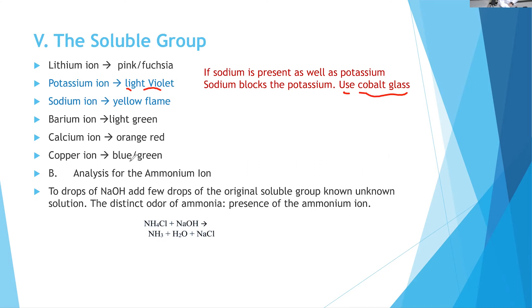For example, copper would give like a greenish blue color or bluish green color. Calcium would be like orange red color. Barium is going to be light green color. And lithium is going to be a pink color.